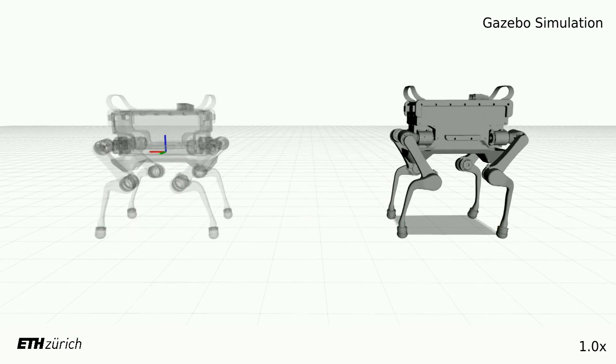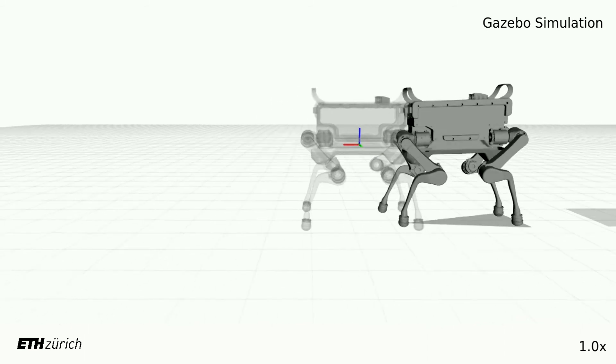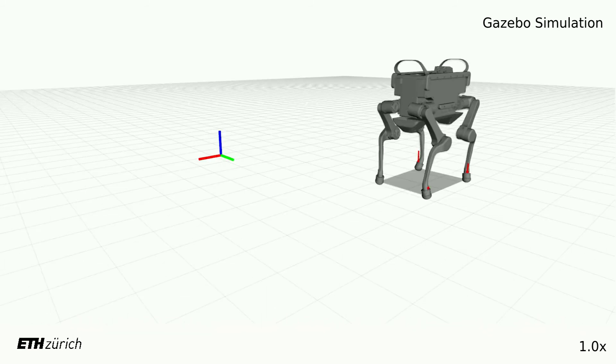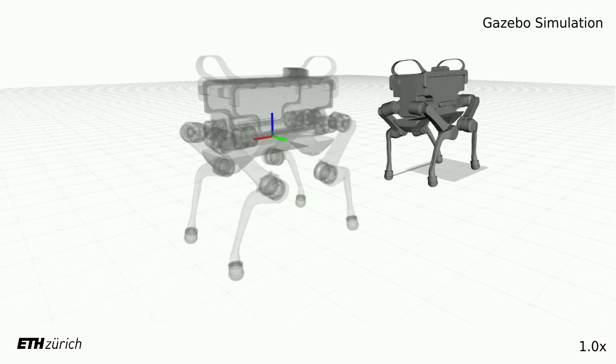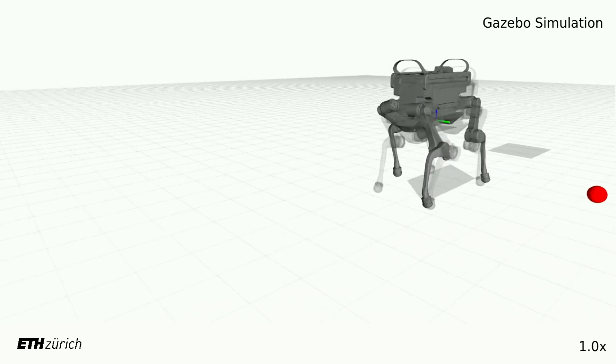For this, we use an inverse dynamics-based controller to produce the appropriate joint torques that track the produced motion plans. We demonstrate that we can execute walking, galloping and pacing motion plans, all with the same controller.